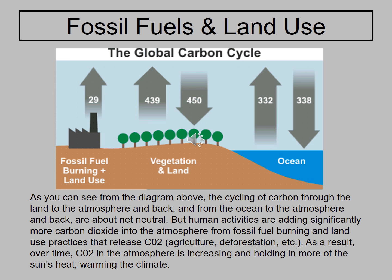Looking at the global carbon cycle, you can see the cycling of carbon through land to atmosphere and back, and ocean to atmosphere and back — they're about net neutral. The difference is that fossil fuels add an additional amount of CO2 into the atmosphere that is not being reabsorbed back. So that loop on land is not a closed one — more and more CO2 is being added to the atmosphere that isn't getting reabsorbed by the vegetation.